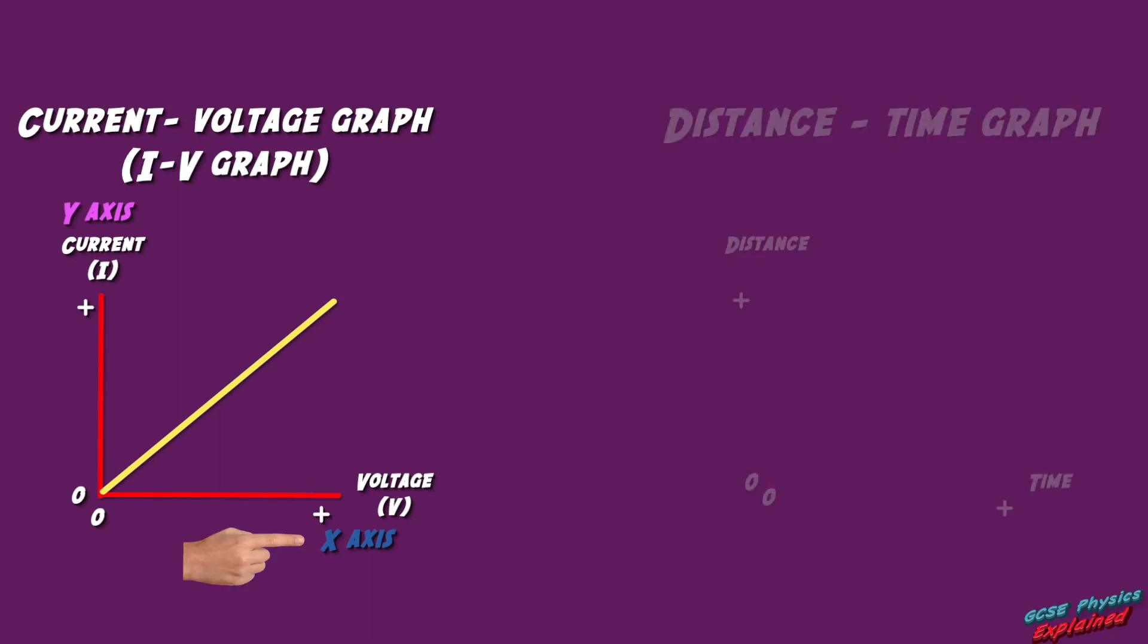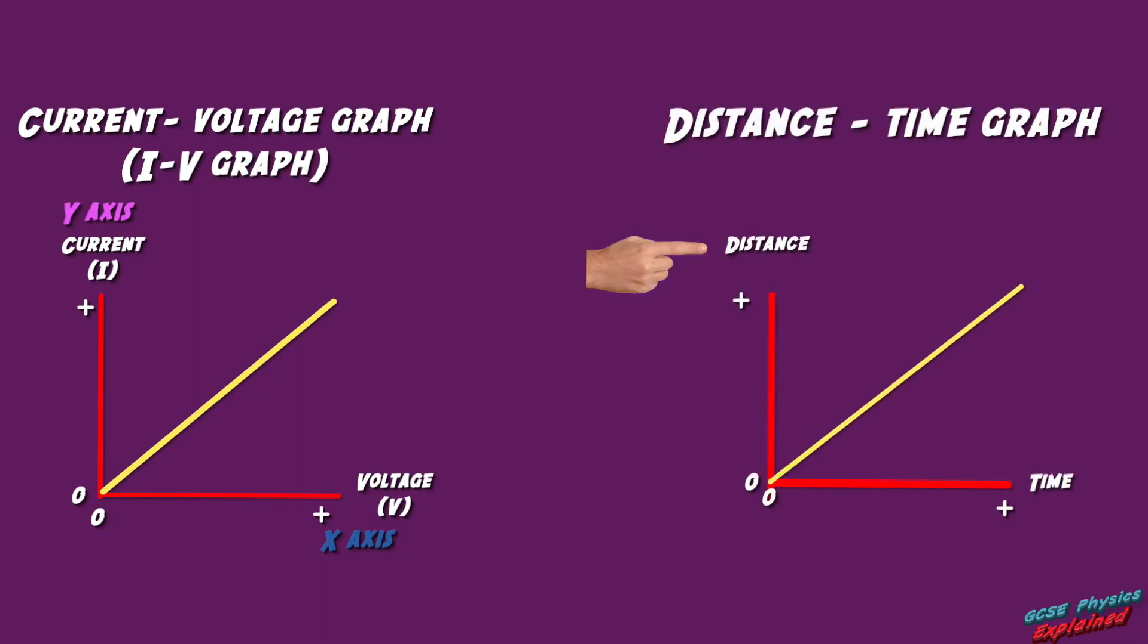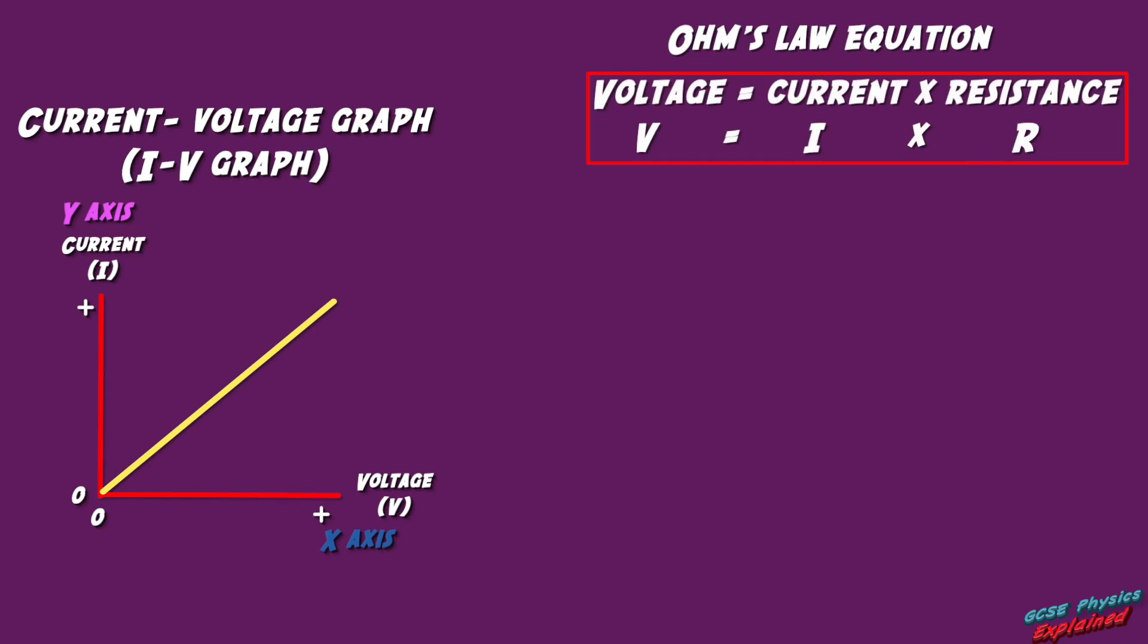For example, if I see a distance time graph, distance goes on the y-axis and time goes on the x-axis. Anyway, getting back on track, the Ohm's law equation is voltage equals current times by resistance. V equals I times by R.